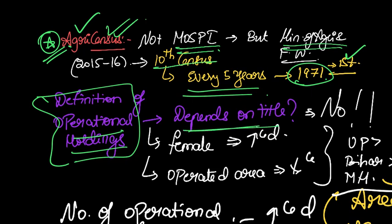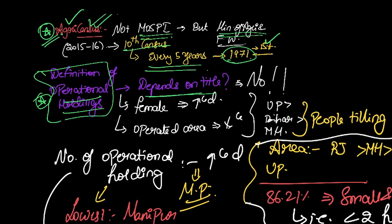If you take only those operational holdings which depend on title - that is ownership - then you will obviously be missing a lot. Because a huge number of farmers do not own the land that they are tilling. So the first thing that you have to note here is: the definition of operational holdings is irrespective of the ownership and title. It is not dependent on the title.